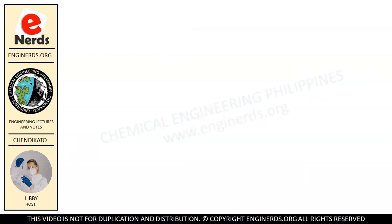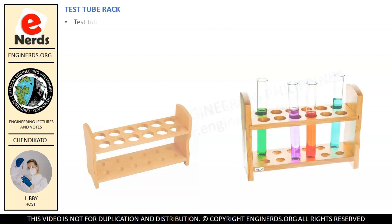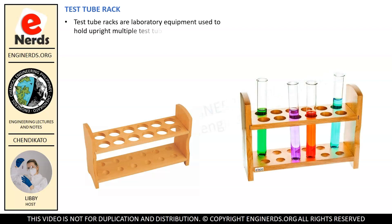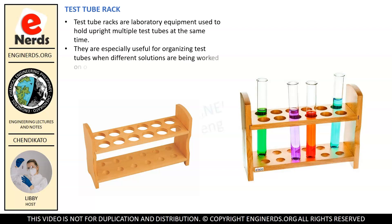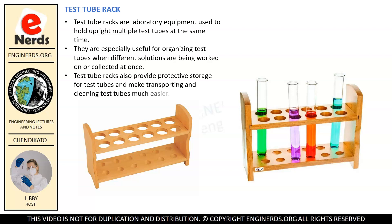Since a test tube usually contains liquids or other chemical samples, you will always have to keep it upright. Otherwise, the chemicals inside the test tube will spill out. This is where test tube racks will be very useful. Test tube racks are laboratory equipment used to hold upright multiple test tubes at the same time. They are especially useful for organizing test tubes when different solutions are being worked on or collected at once. Test tube racks also provide protective storage and make transporting and cleaning test tubes much easier.